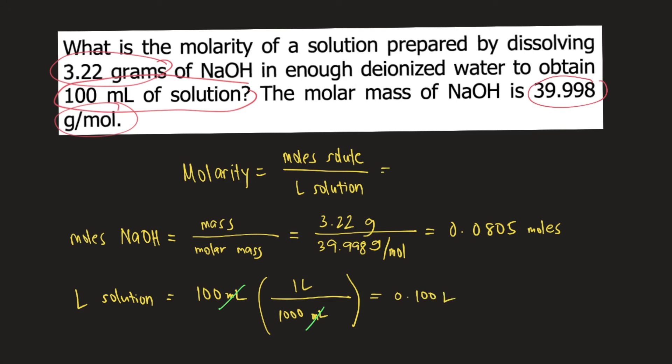Now that we have the moles and the liters of solution, we plug these into the equation for molarity. Molarity equals 0.0805 moles divided by 0.100 liters. If you solve this, it equals 0.805 moles per liter or 0.805 molar. Capital M or molar is the same as moles per liter. This is the answer to the question.